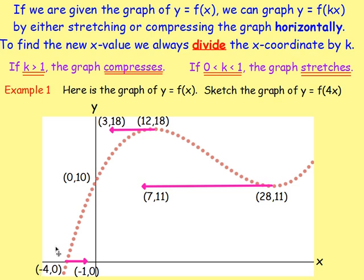If you do that, negative 4 divided by 4 is negative 1, so that will be the point negative 1, 0. 0, 10 will remain as 0, 10, because if you divide 0 by 4 you still have 0. 12 divided by 4 will be 3, so that will be the point 3, 18. And 28, 11, but if you divide by 4 you will have 7, 11.